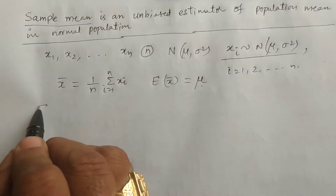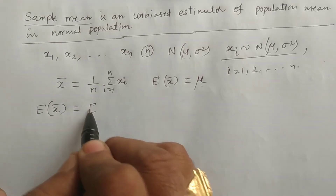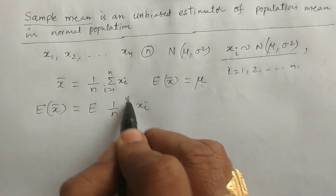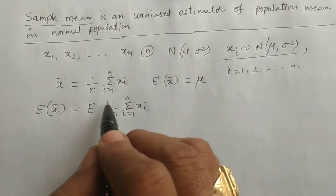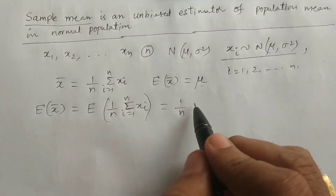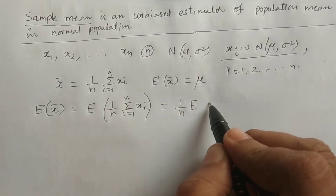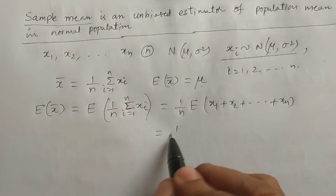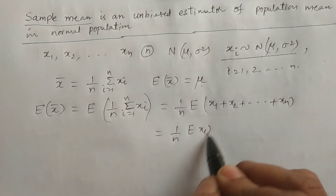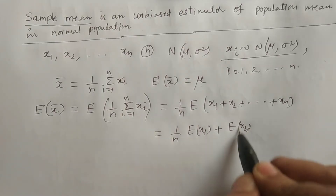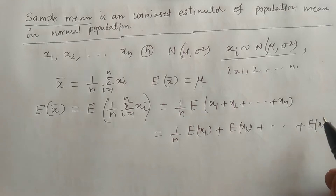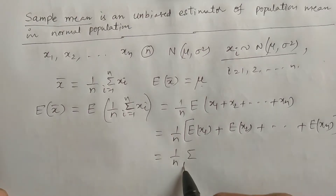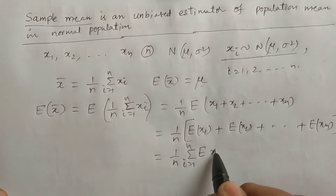So we consider expectation of x bar. Expectation of x bar is 1 by n times summation of xi, where summation runs from i equals 1 to n. Taking 1 by n outside and applying the addition theorem of expectations, it becomes 1 by n times summation i equals 1 to n of expectation of xi.